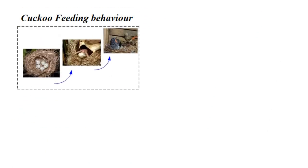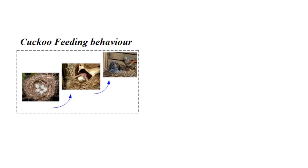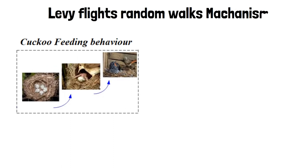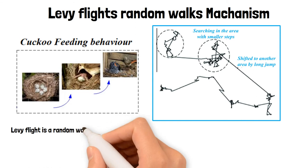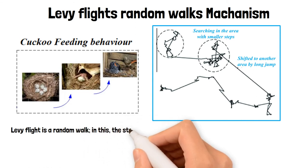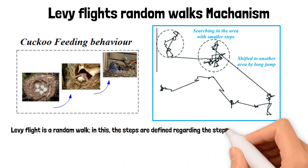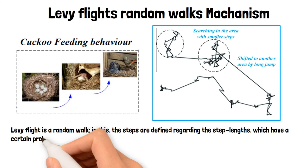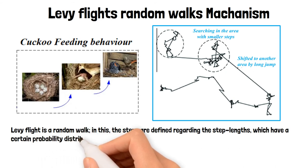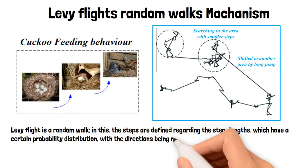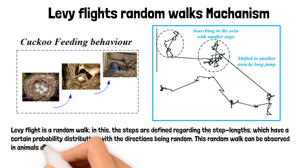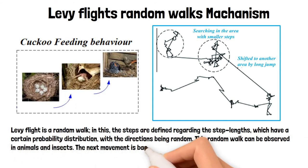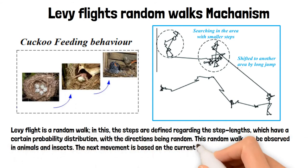The cuckoo feeding behavior is also focused on the Lévy flight random walk mechanism in the cuckoo search algorithm. Lévy flight is a random walk in which the steps are defined by step lengths that have a certain probability distribution, with the directions being random. This random walk can be observed in animals and insects, and the next movement is based on the current position.